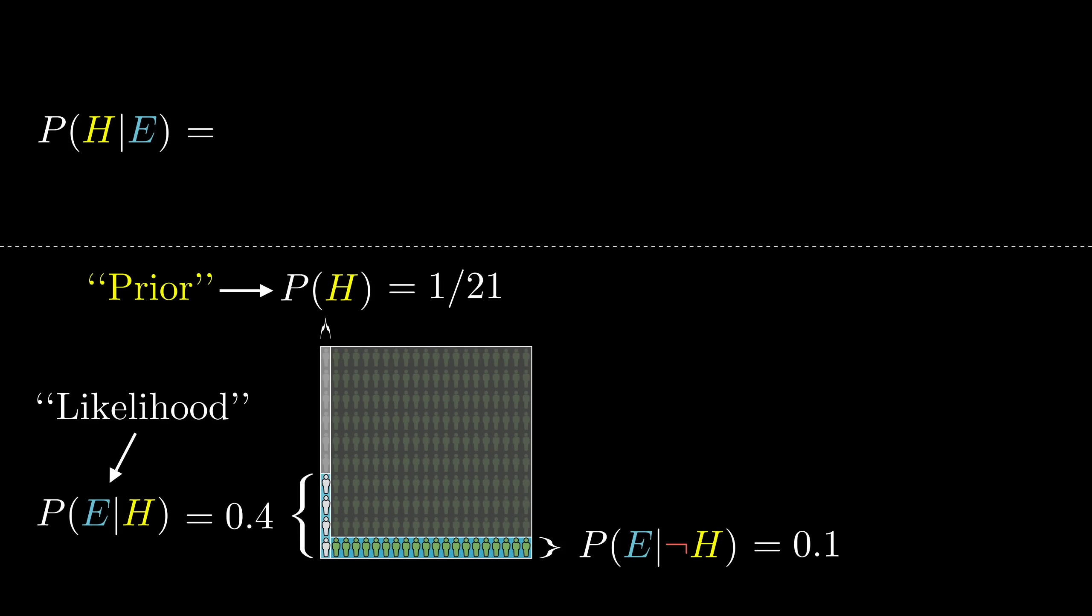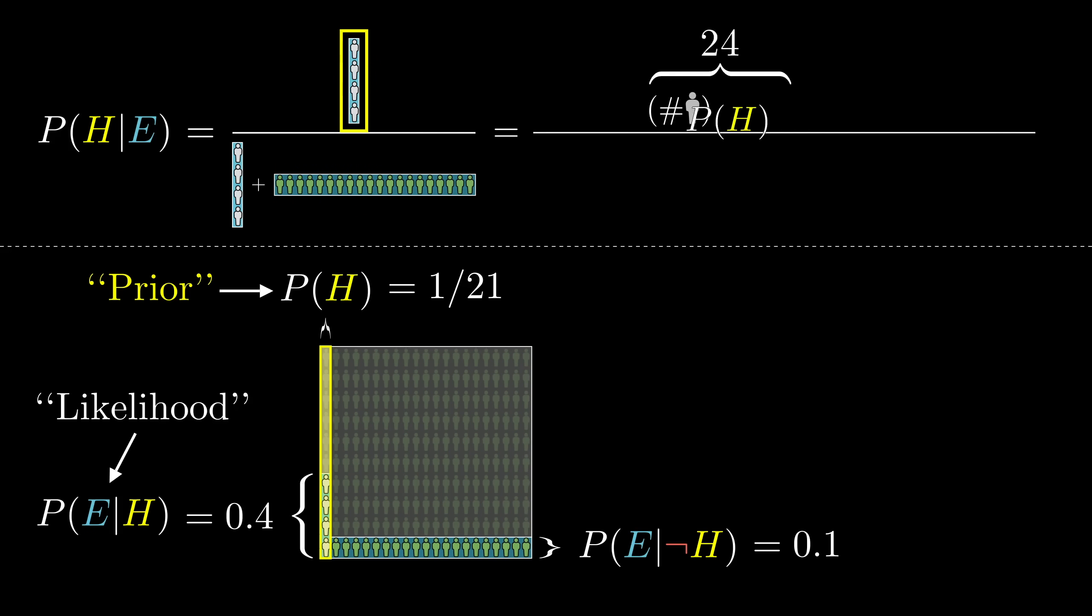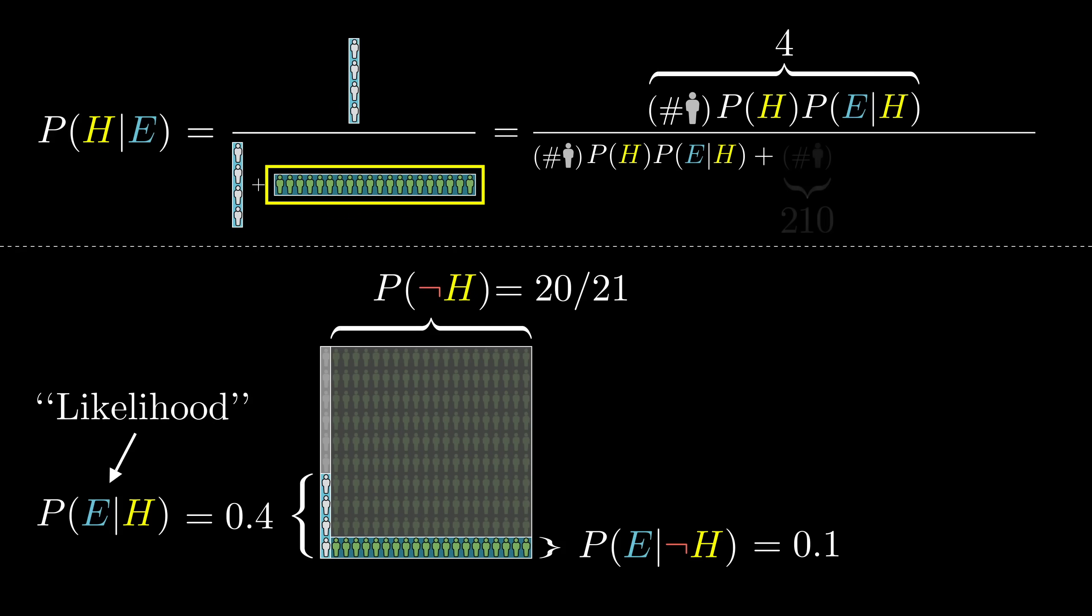So with the notation in place, remember what our final answer was. The probability that our librarian hypothesis is true given the evidence is the total number of librarians fitting the evidence, 4, divided by the total number of people fitting the evidence, 24. But where did that 4 come from? Well, it's the total number of people times the prior probability of being a librarian, giving us the 10 total librarians, times the probability that one of those fits the evidence. That same number shows up again in the denominator, but we need to add in the rest: the total number of people times the proportion who are not librarians times the proportion of those who fit the evidence, which in our example gives 20.